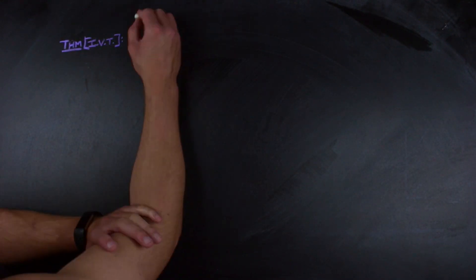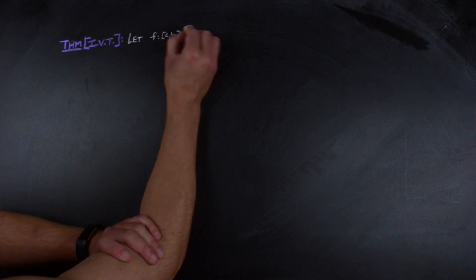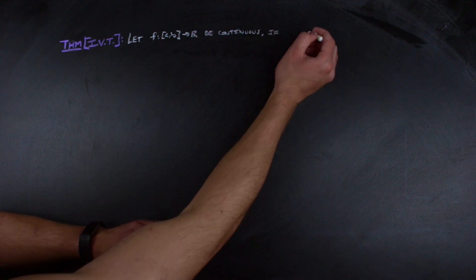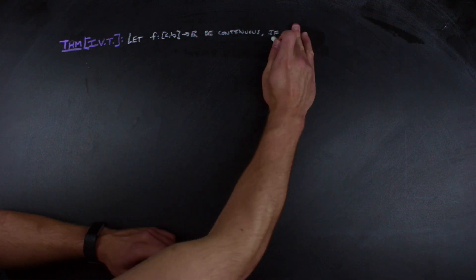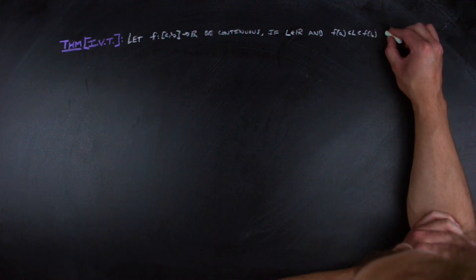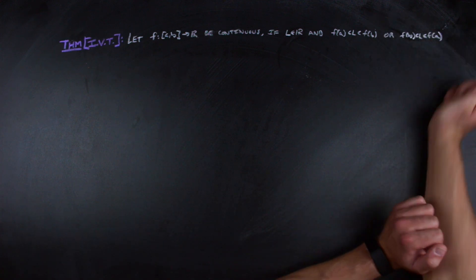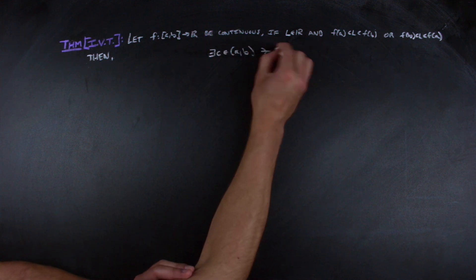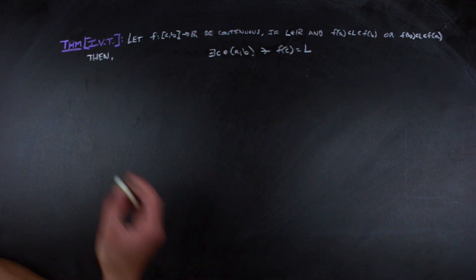Recall that the intermediate value theorem can be stated as follows. Let f from the closed interval a, b to the real numbers be continuous. If l is a real number such that l is between the images of a and b, then there exists a c in the interior of the domain of f such that the image of c is equal to l.